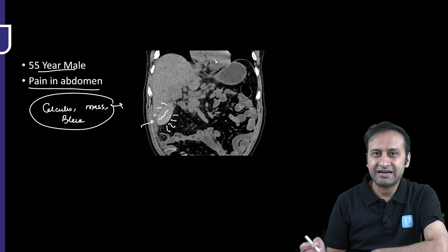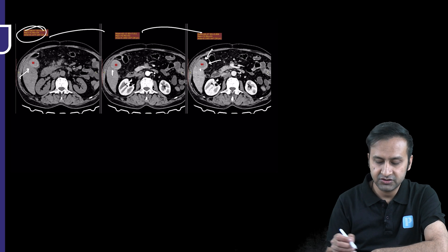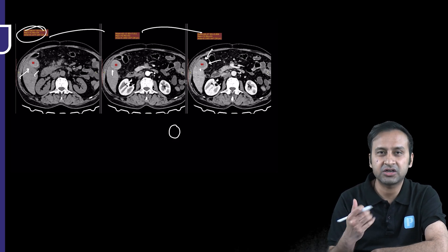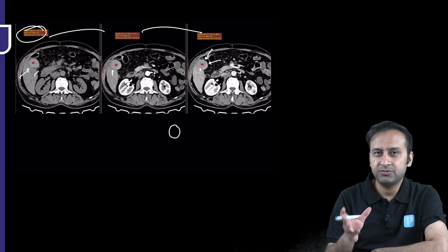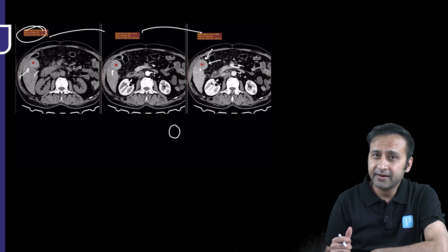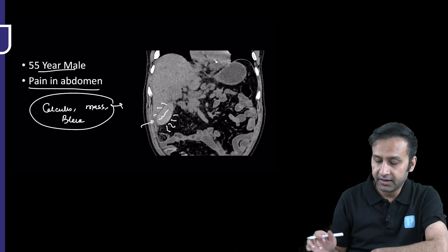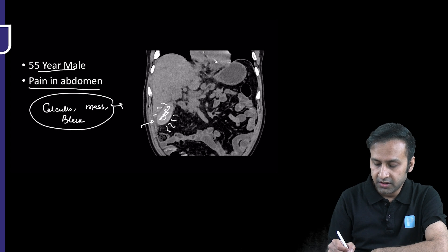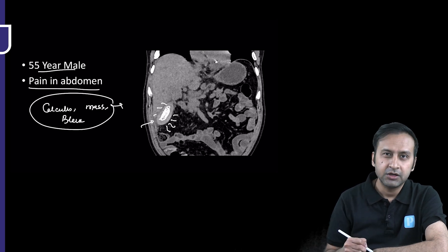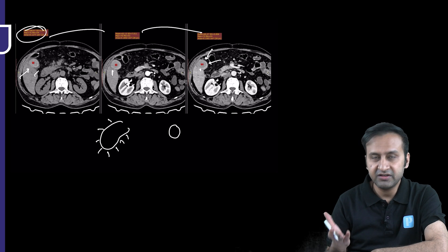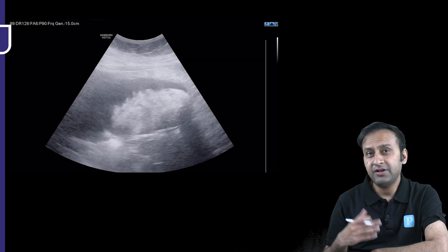Looking at this, is it a stone? Stones do not fill the gallbladder like this — if there were a stone, you would see one spherical structure. The entire GB appears hyperdense. Does it look like a porcelain gallbladder? Certainly not, because porcelain gallbladder shows calcifications along the wall, whereas here the hyperdensities are present along the inner lumen of the gallbladder.